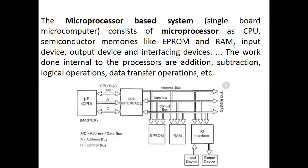The microprocessor-based system, or microcomputer, consists of a microprocessor CPU, semiconductor memory such as program memory, input devices, output devices, and interfacing devices. The work done internal to the processor includes addition, subtraction, logical operations, data transfer operations, and so on. This gives a general idea of your computer and how the microprocessor is integrated.